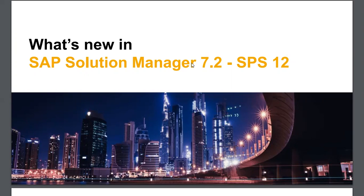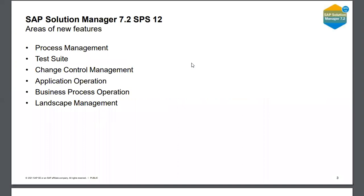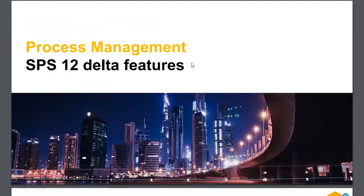The key areas where SAP has released new features with SP12 are: process management, test suite, change control, landscape management, application operations, business process operations, and landscape management. There are no major changes overall, but there are some delta features SAP has released with this version. Let's go through them one by one, starting with process management.